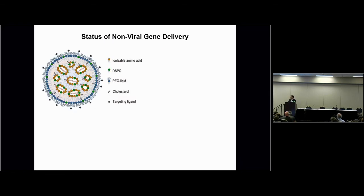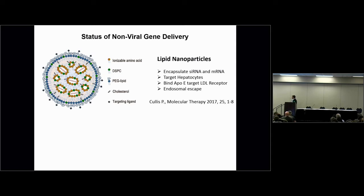Regarding the status of non-viral delivery: lipid nanoparticles can encapsulate siRNA and mRNA and target hepatocytes. One of their Achilles heels is that they target hepatocytes by absorbing APOE in the blood, which acts as their targeting ligand. They then bind the LDL receptor and are taken up by hepatocytes. They contain an endosomal escape lipid that helps deliver both RNAi and mRNA. Peter Cullis published a nice review in our journal in 2017 — I'd recommend it.